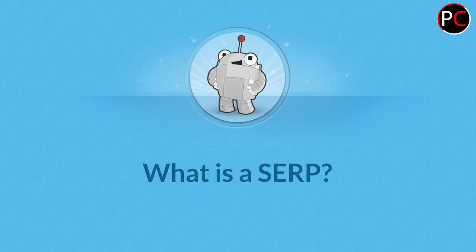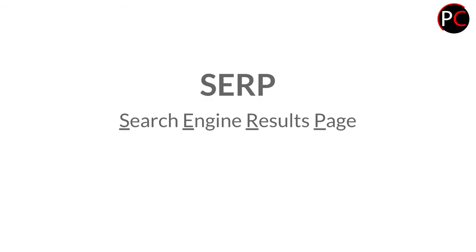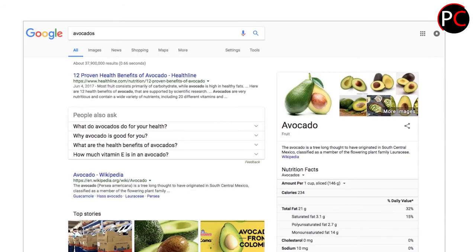So what is a SERP and what does that word mean in SEO? SERP just refers to search engine results page — when I run a query in a search engine, the page that shows up is a SERP. Here's an example: I've queried the word 'avocados' in Google and it delivers me this page.